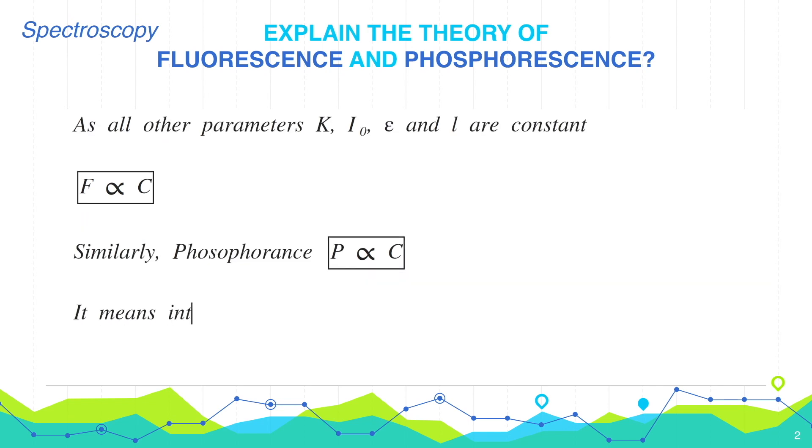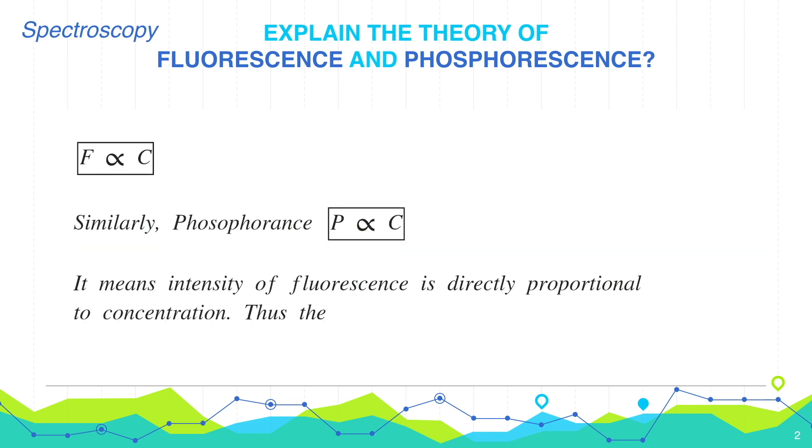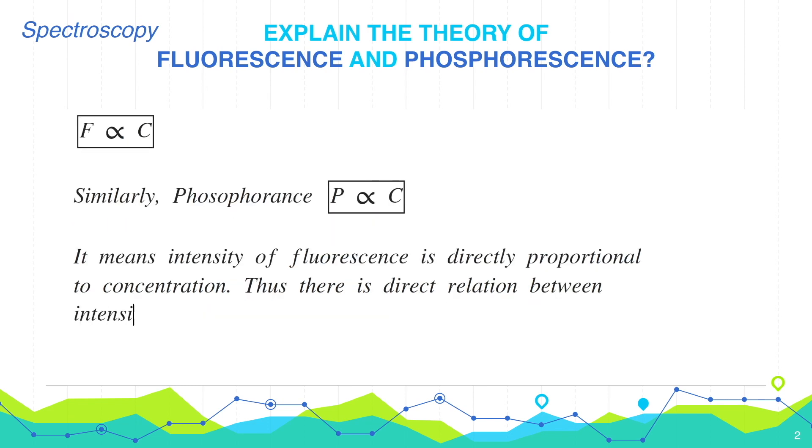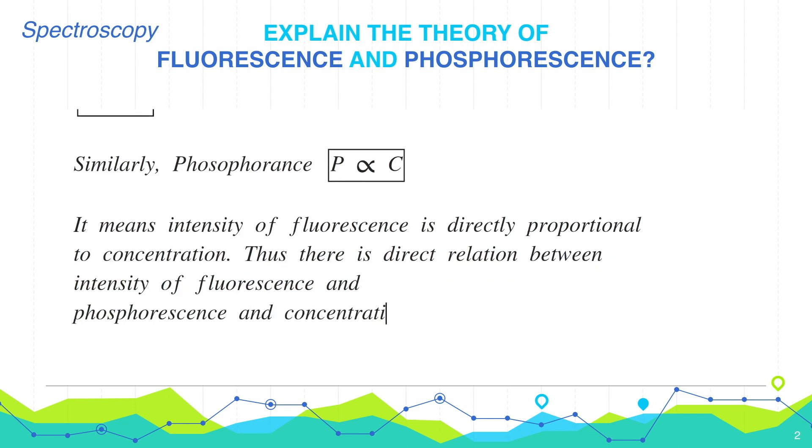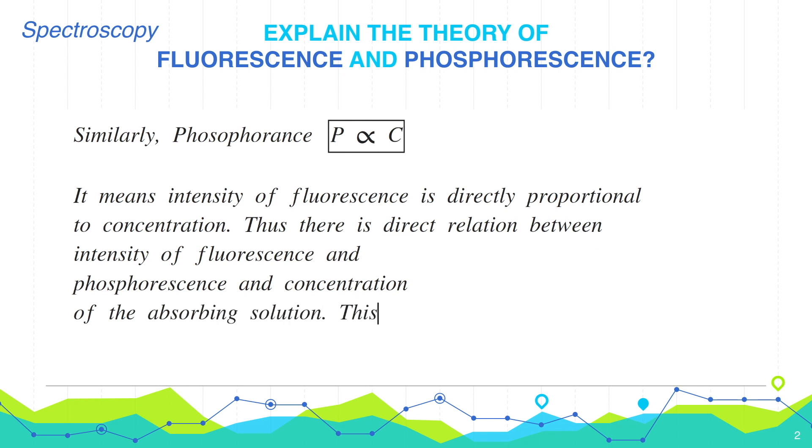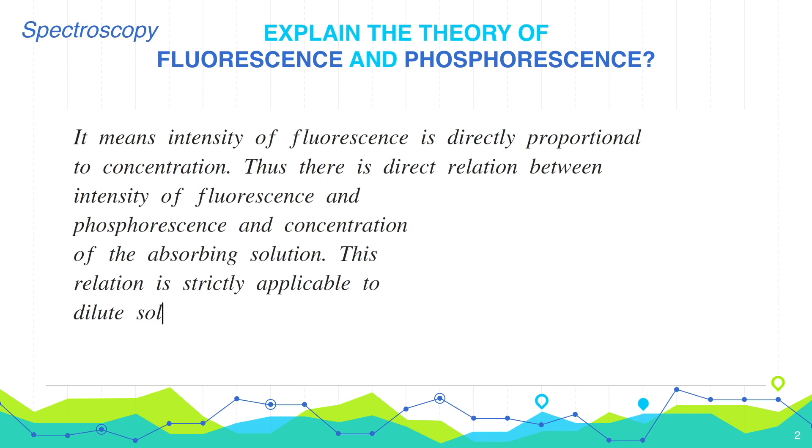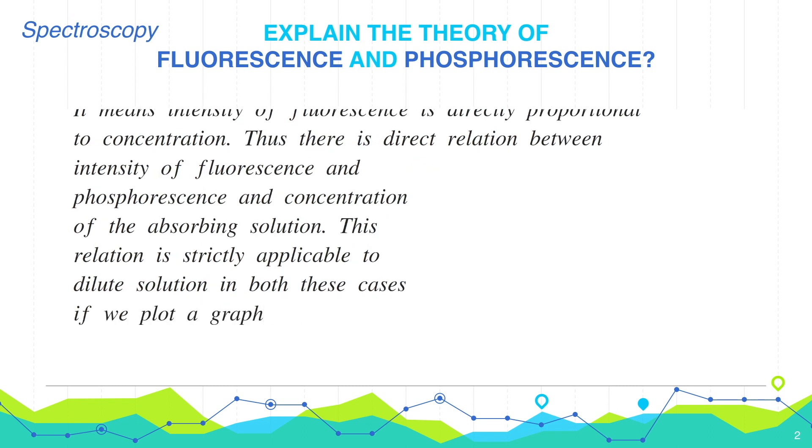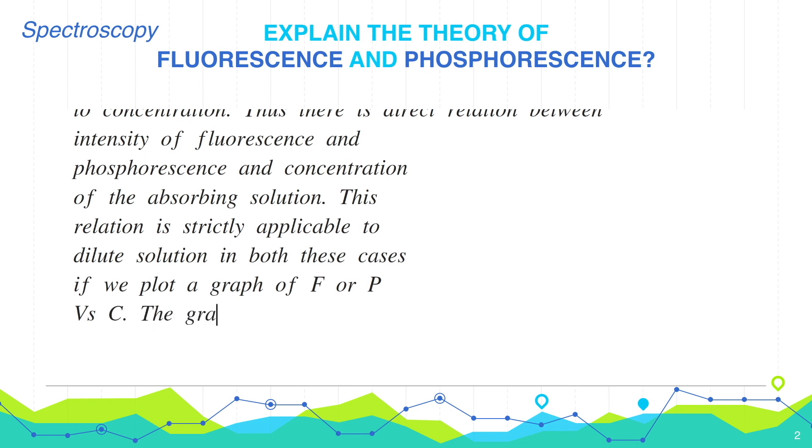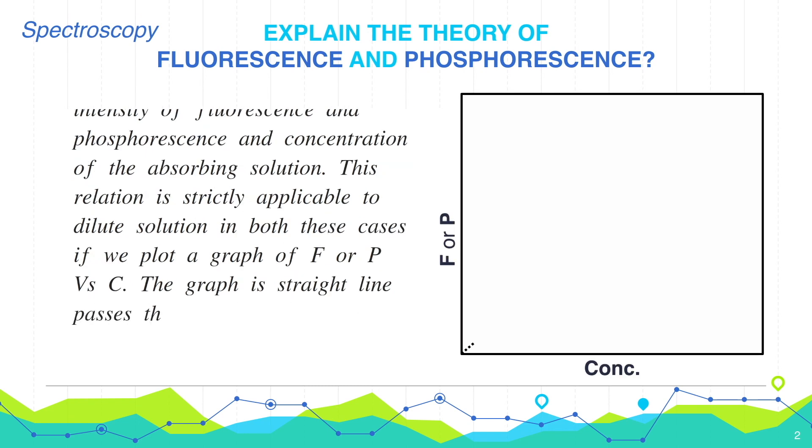It means intensity of fluorescence is directly proportional to concentration. Thus, there is a direct relation between intensity of fluorescence and phosphorescence with the concentration. This relation is strictly applicable to dilute solutions. In both these cases, if we plot a graph of fluorescence or phosphorescence versus concentration, the graph is a straight line passing through the origin.